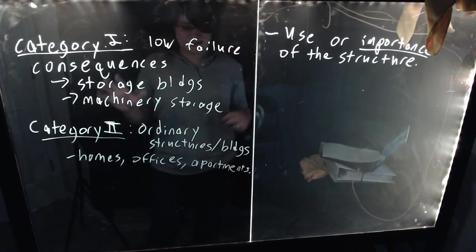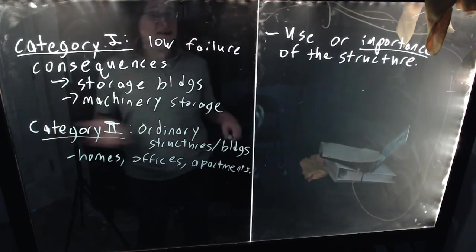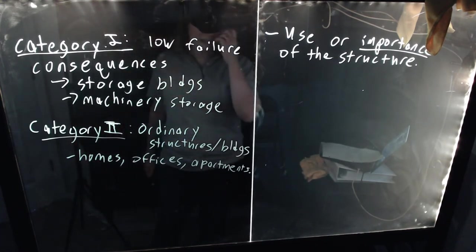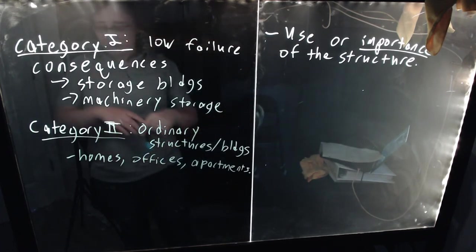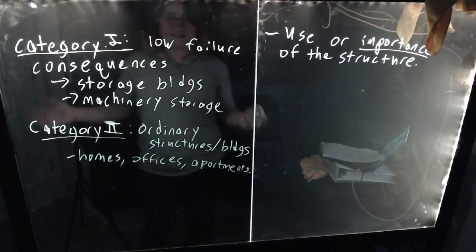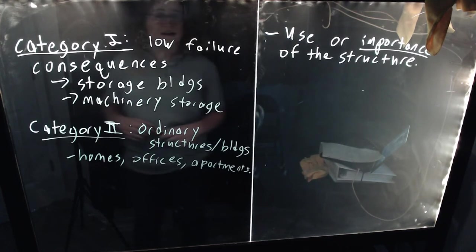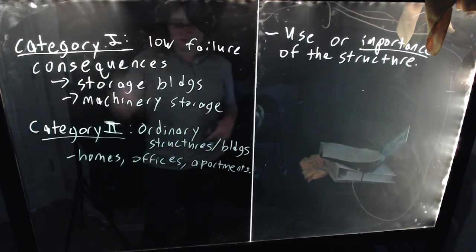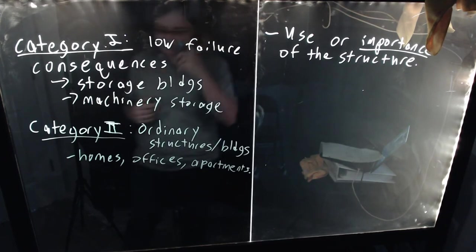For Category I, this importance factor will actually end up reducing the standard loads we apply to them. For Category II, your factor is typically going to be just one. In other words, the environmental loads are calculated for ordinary structures, and then we scale them up or scale them down depending on what type of importance we're looking at. 95% of the time you're going to be dealing with a Category II structure. These are things like houses, offices, simple factories.